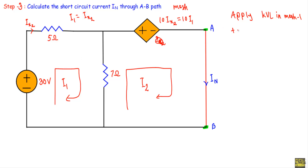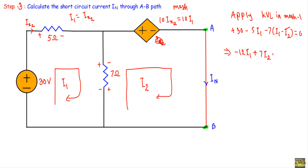Applying KVL in mesh 1: +30 − 5·I1 − 7·(I1 − I2) = 0, which gives 12·I1 − 7·I2 = 30. This is equation 3.